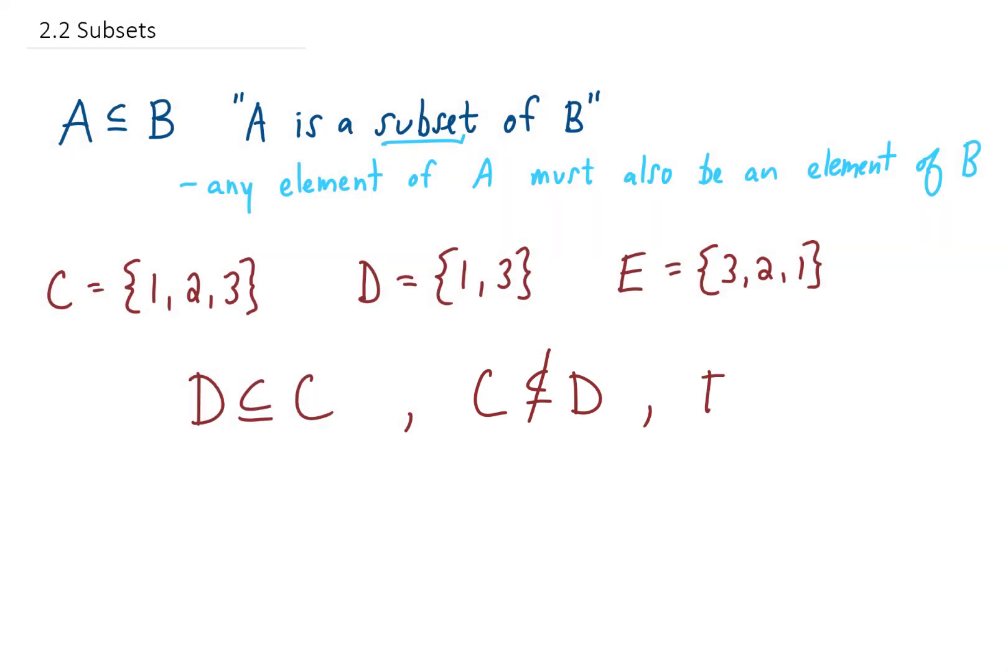We could also point out that D is a subset of E for the same reason. D includes one and three, and those two elements are also in E. We could also ask the question, is C a subset of E? So you look at the set C, it has one, two, and three in it, and you ask the question, are all of those elements also in E? And the answer is yes, so C is a subset of E. In fact, C equals E, because C and E have all of the same elements. So I guess that means that a set is a subset of itself. It sounds like a strange philosophical statement, but it is true.